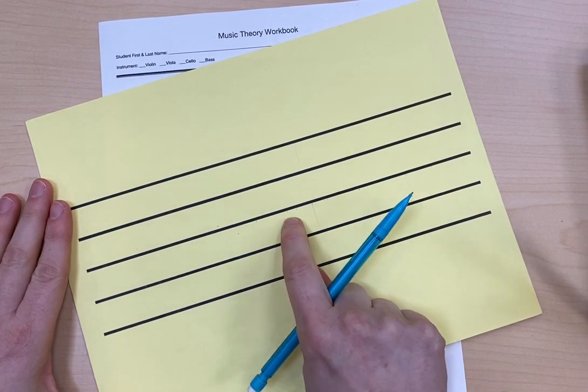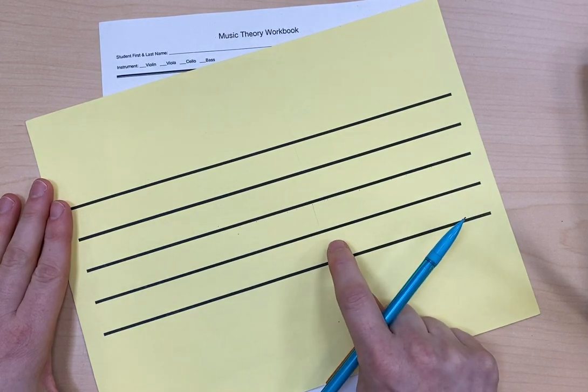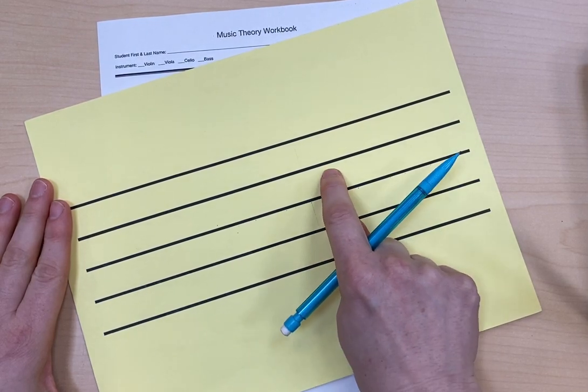So line one, line two, line three, line four, line five, space one, space two, space three, space four.